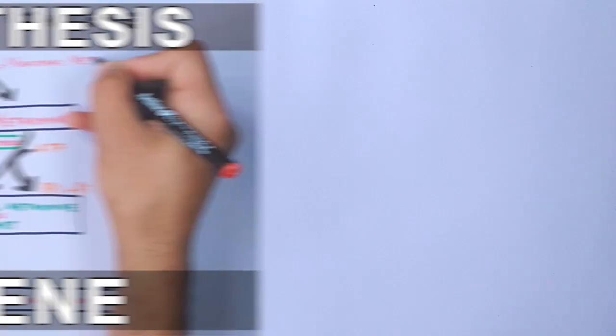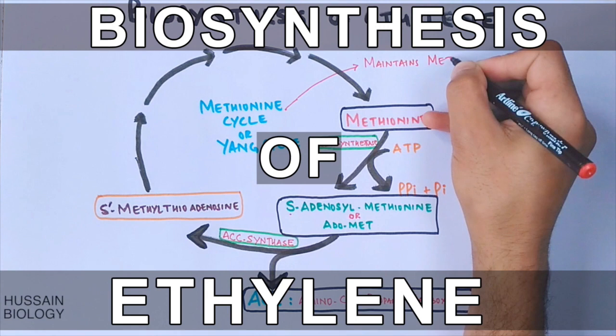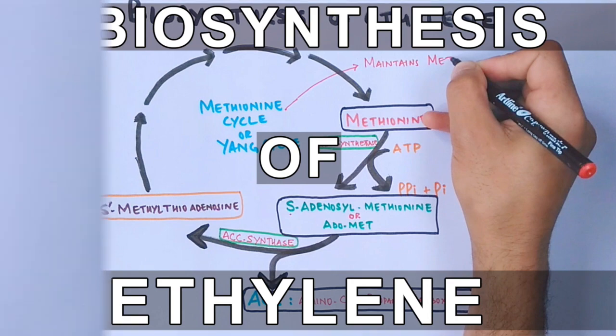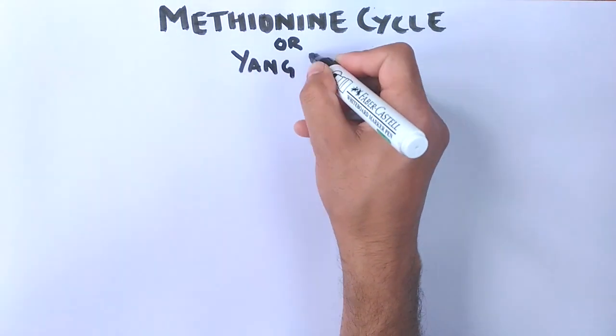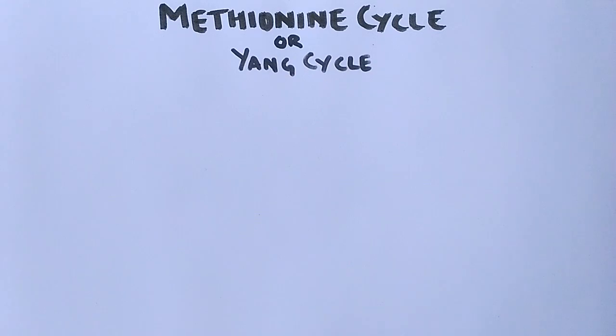In the previous video we discussed about biosynthesis of ethylene. If you want to watch that video first, you can click the link above from the i button or find it in the description. Now in this video we'll be discussing about the methionine cycle or Yang cycle in plants, which is the principal pathway for ethylene biosynthesis.